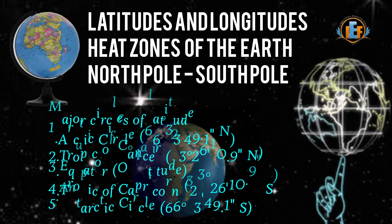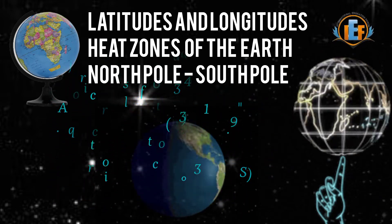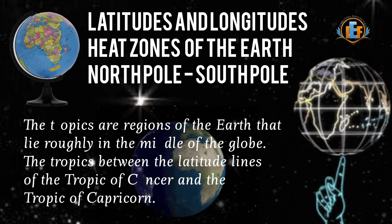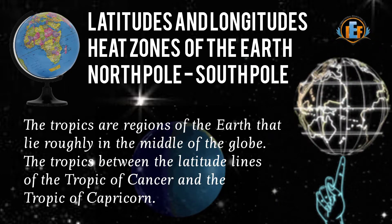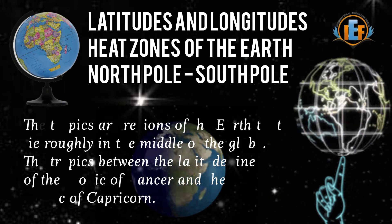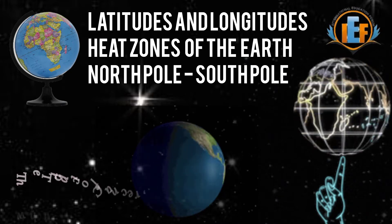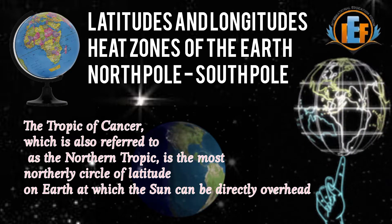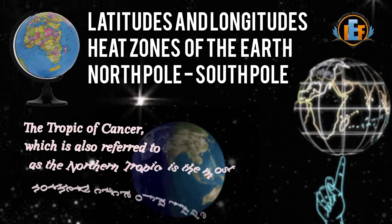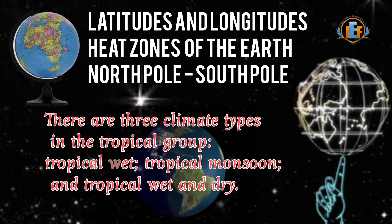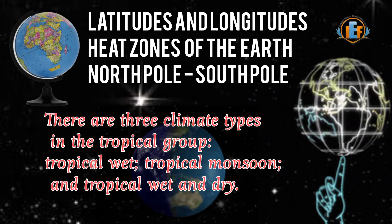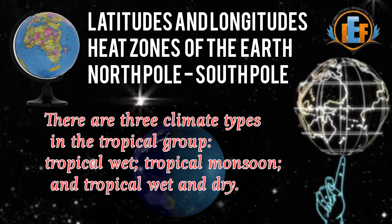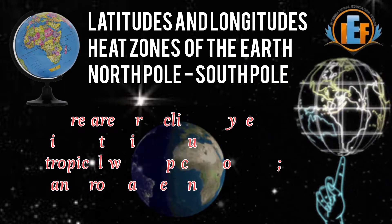The area lying between the Tropic of Cancer and the Tropic of Capricorn is known as the tropical zone. The sun rays directly fall on this area. It has a hot, wet climate — tropical forests, tropical monsoon climate, and tropical rain forest.